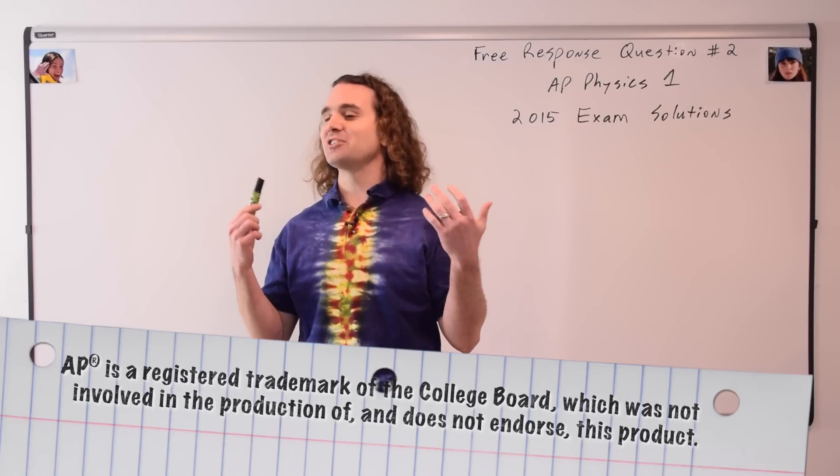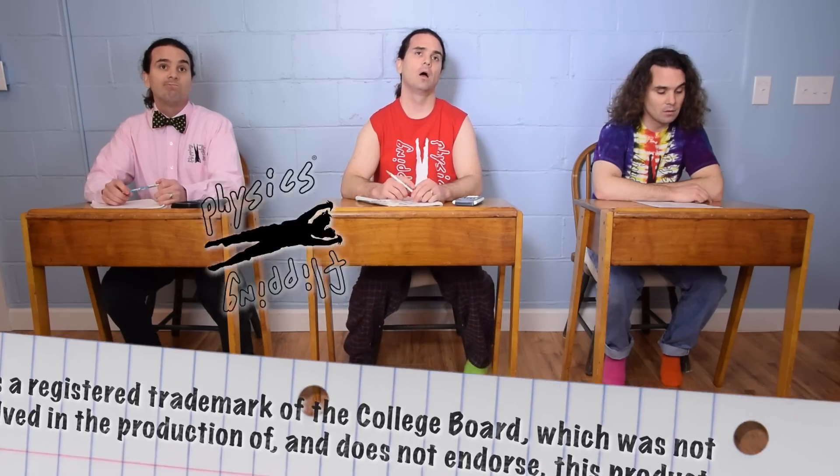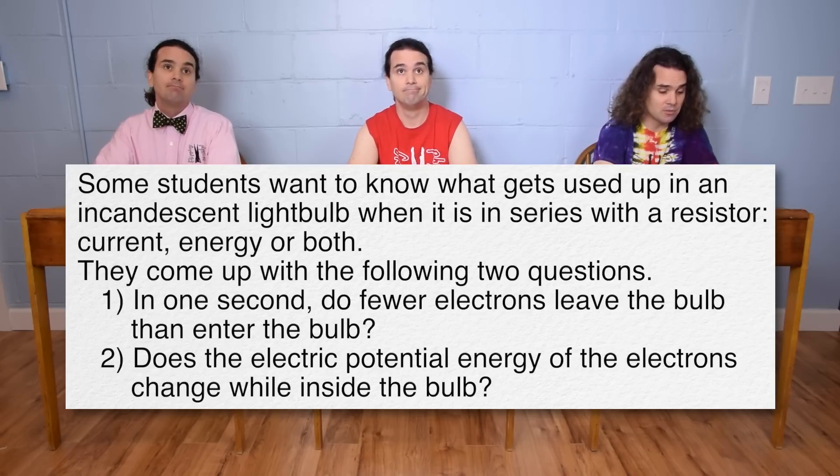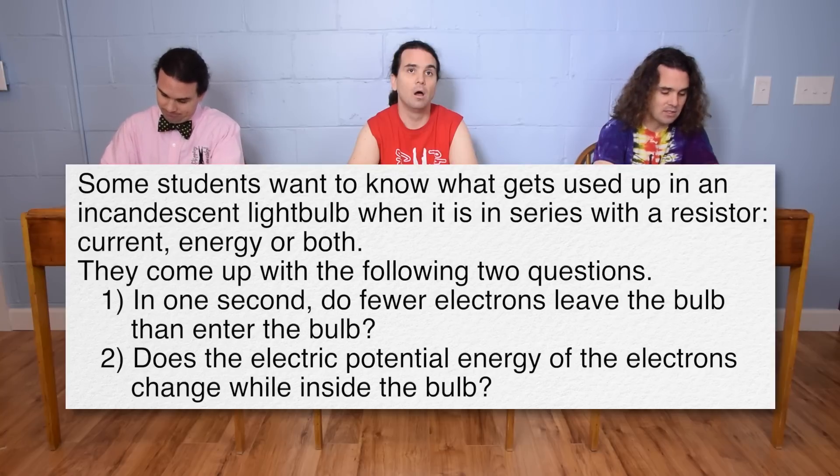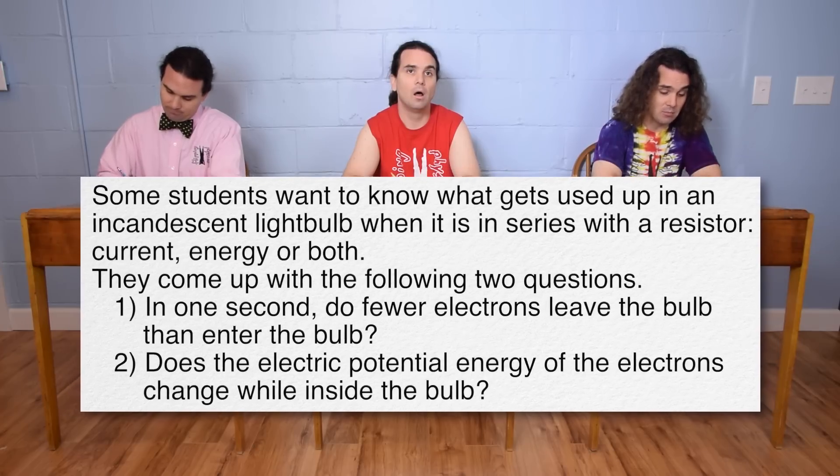Bo, could you please read through question two? Some students want to know what gets used up in an incandescent light bulb when it is in series with a resistor: current, energy, or both. They come up with the following two questions. One, in one second, do fewer electrons leave the bulb than enter the bulb? Two, does the electric potential energy of the electrons change while inside the bulb?